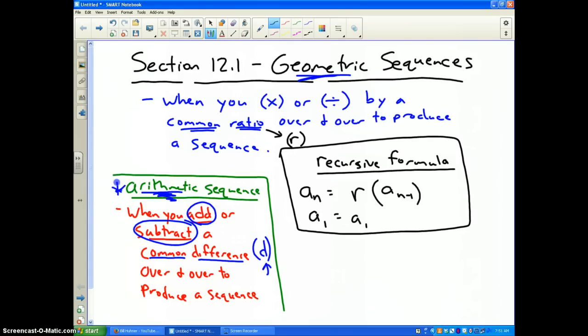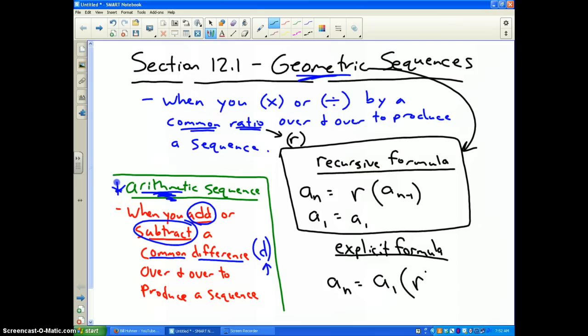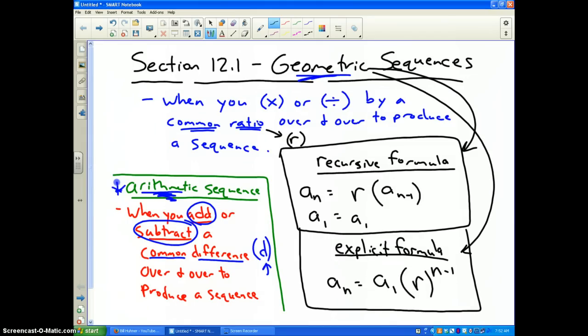The explicit formula for any geometric sequence is also relatively simple. The nth term is equal to the first term times the common ratio to the n minus 1 power. That's it for the geometric sequences. That is your explicit formula. So please pause the video if you need to and copy those two formulas down and highlight them in your notes.